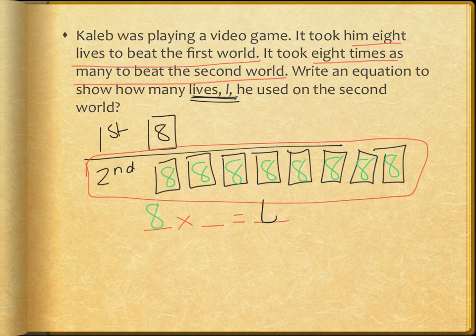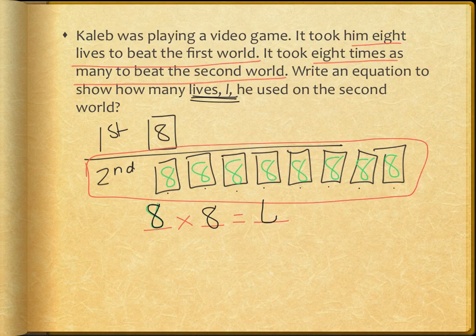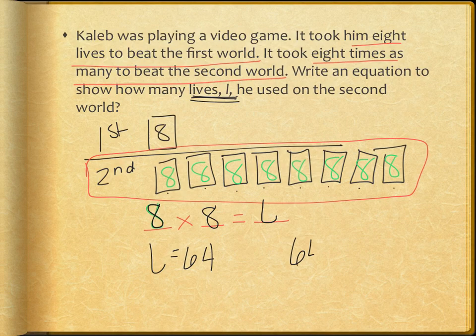Now for my next factor, it's eight times as many — one, two, three, four, five, six, seven, eight. So eight is also my second factor, giving me eight times eight equals L as my equation. To solve for L, I just have to multiply eight times eight. So L equals 64, meaning he used 64 lives.